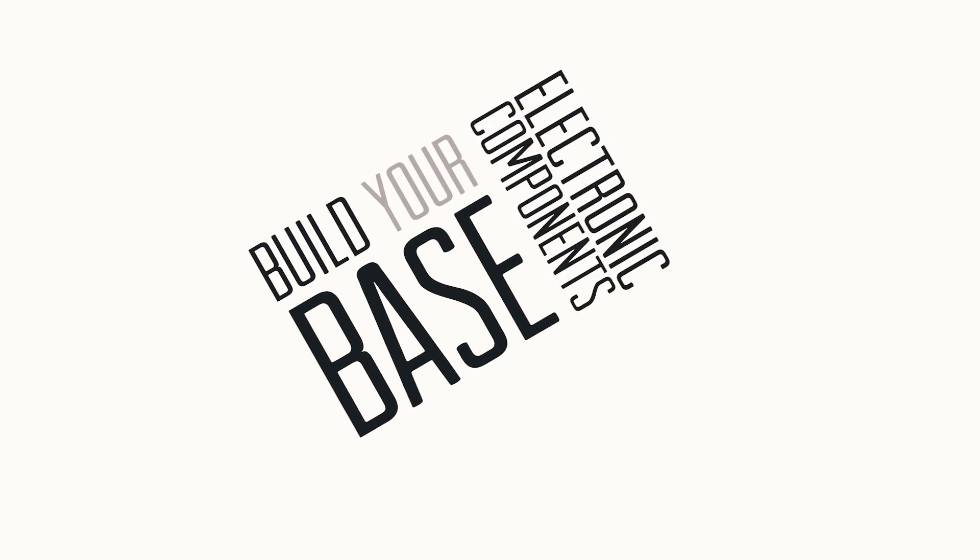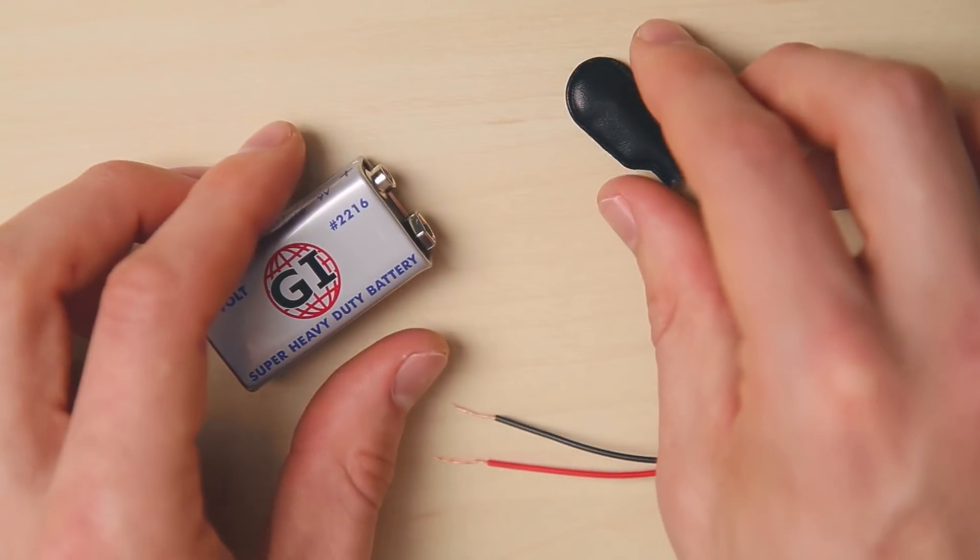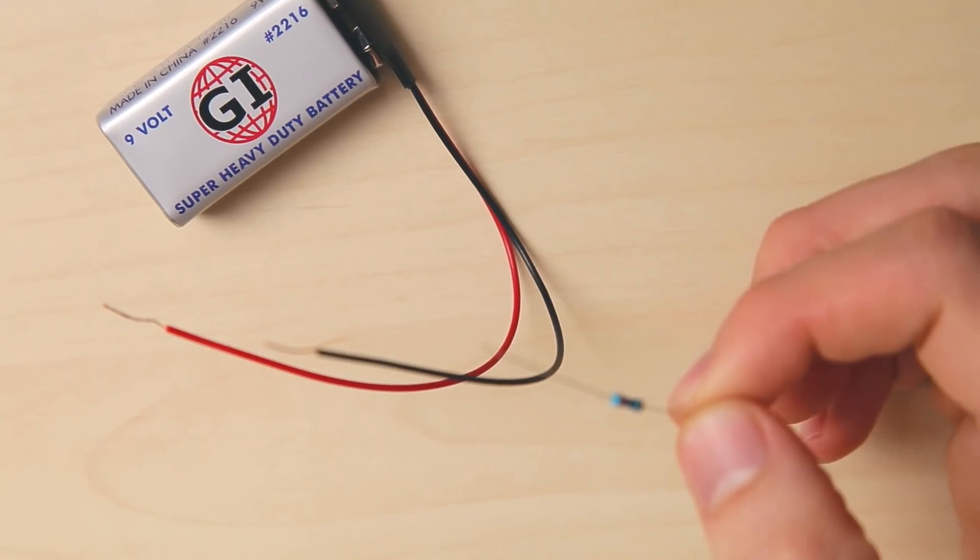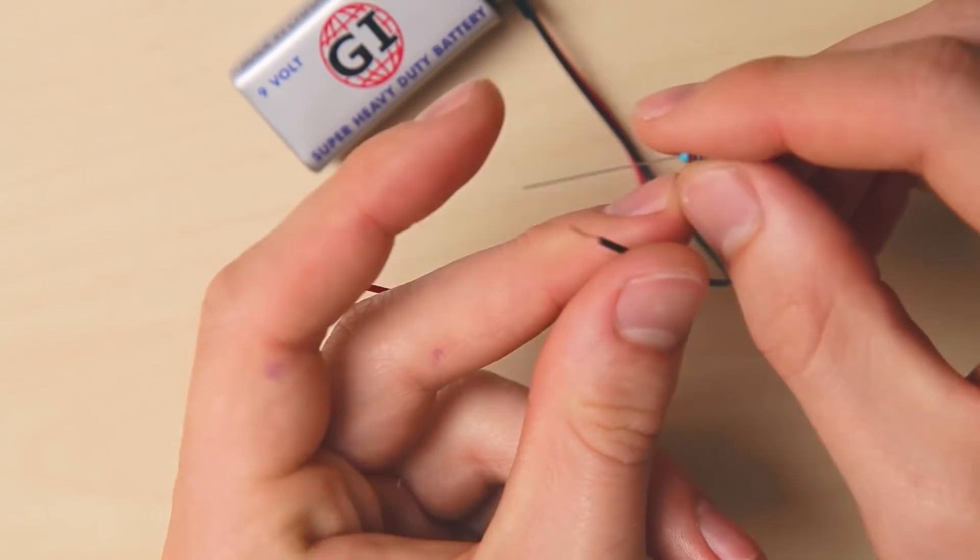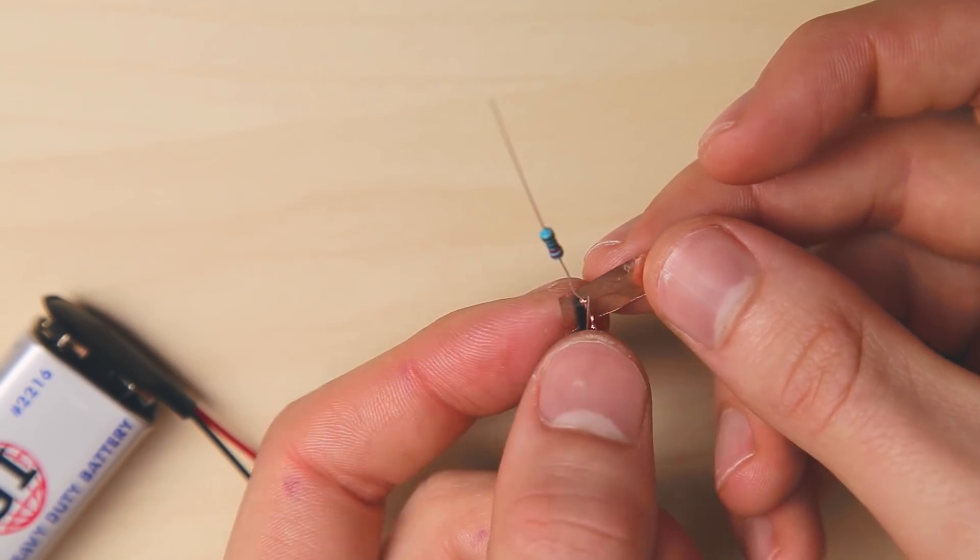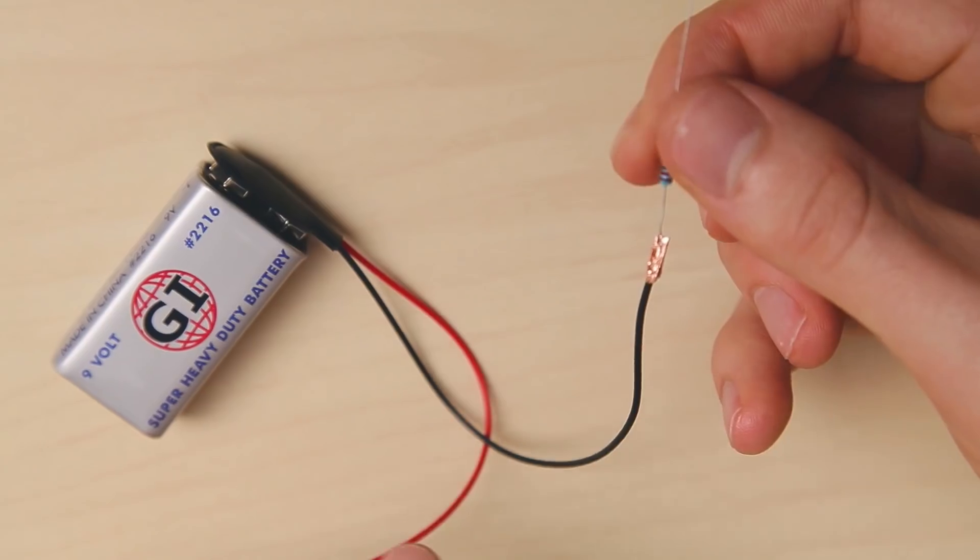The first thing we're going to do is set up all of our electronic components for our lanterns. Take your battery leads and clip them onto your 9-volt battery. Next take a resistor and twist it onto the end of the black wire. Take a small piece of copper tape and wrap it around the joint.